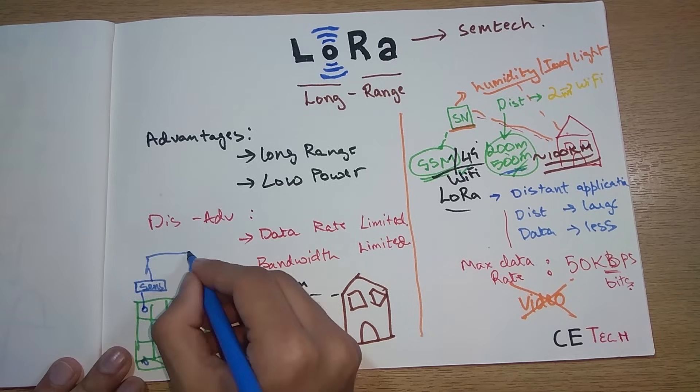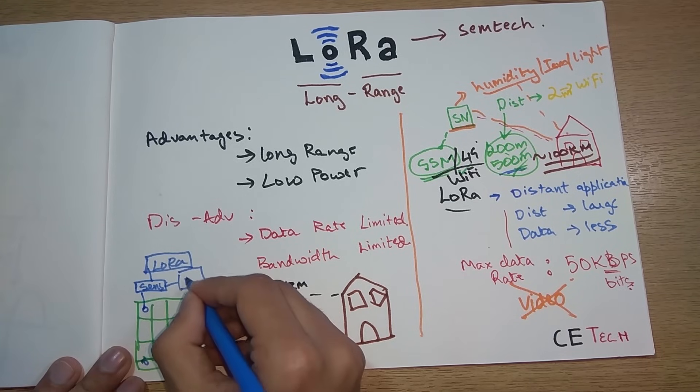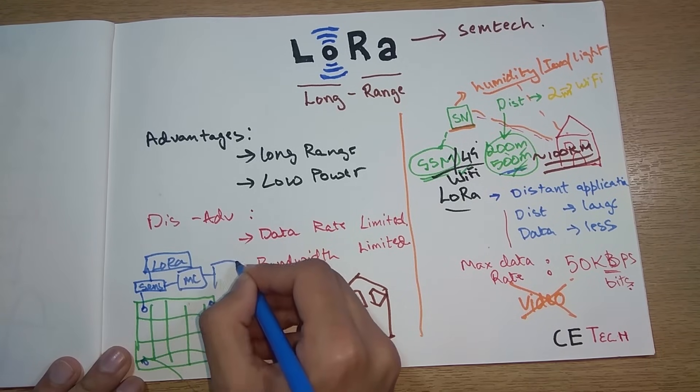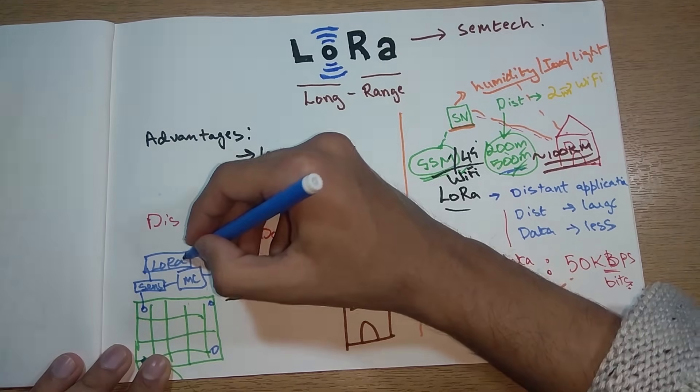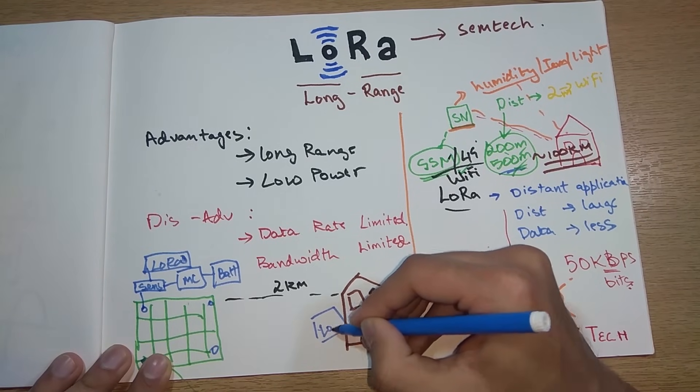What I will do is add a humidity sensor, connect it to LoRa, and use obviously a microcontroller and add a battery for it. Now this LoRa will be connected to a LoRa at home.